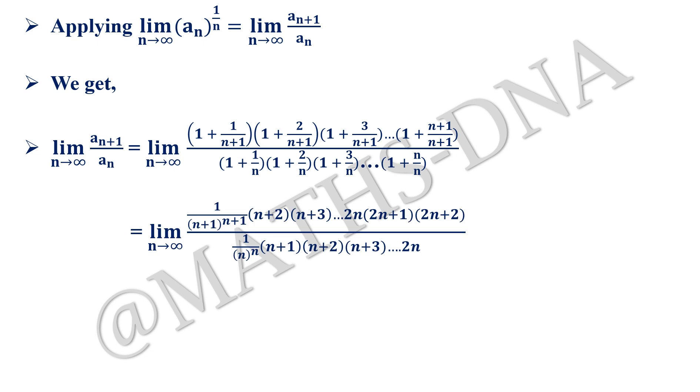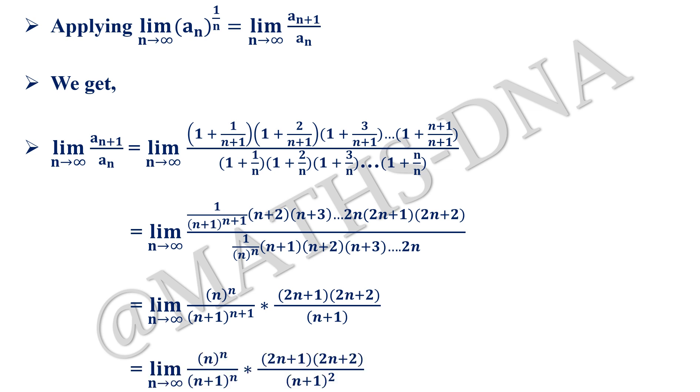That gives us limit n tends to infinity 1 upon n plus 1, and simplifying the terms: n plus 2, n plus 3, up to 2n, 2n plus 1 and 2n plus 2, and in the denominator we have 1 upon n raised to n, n plus 1, n plus 2, up to 2n. We just simplified the terms and took n as the LCM and took it common. This gives us limit n tends to infinity n raised to n upon n plus 1 raised to n plus 1, into 2n plus 1, 2n plus 2, whole divided by n plus 1. Other terms get cancelled out from n plus 2 to 2n.